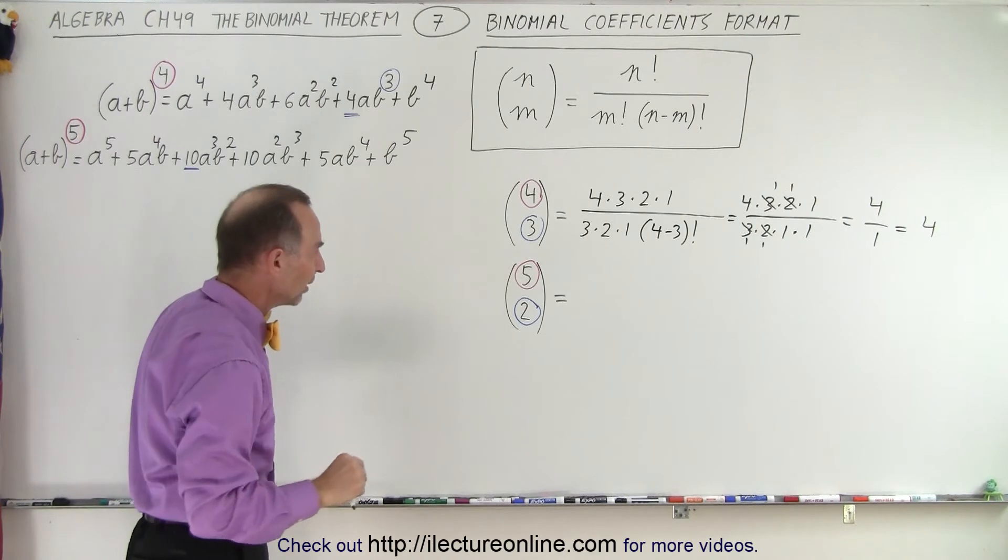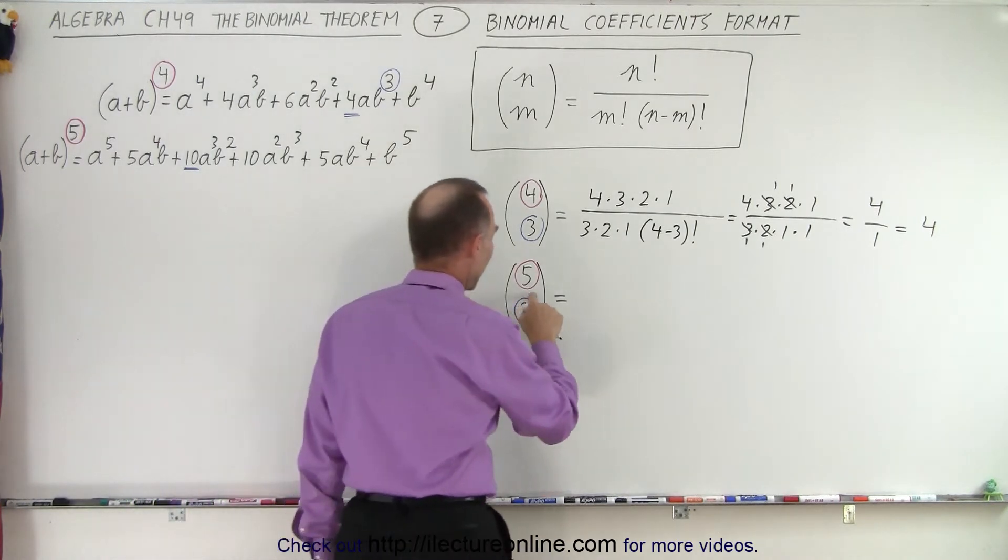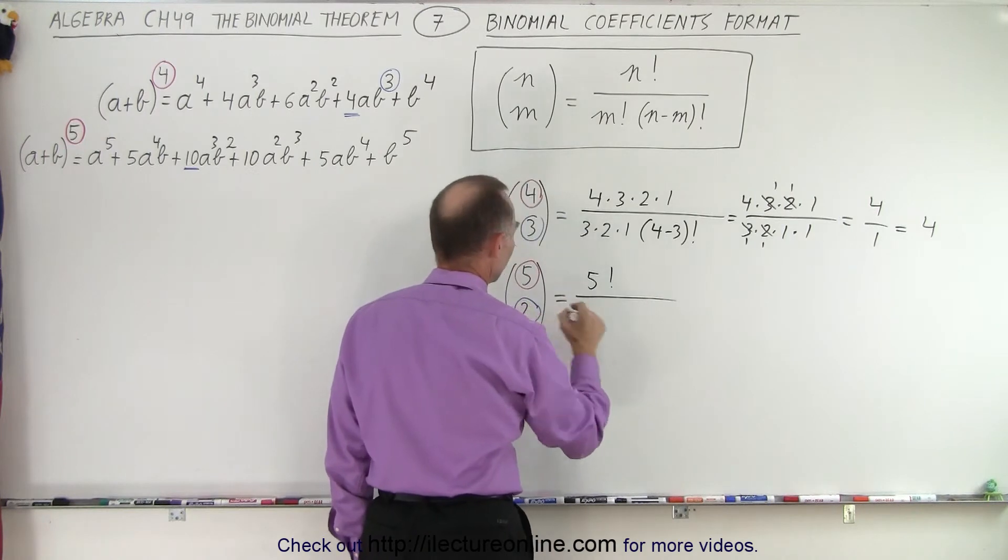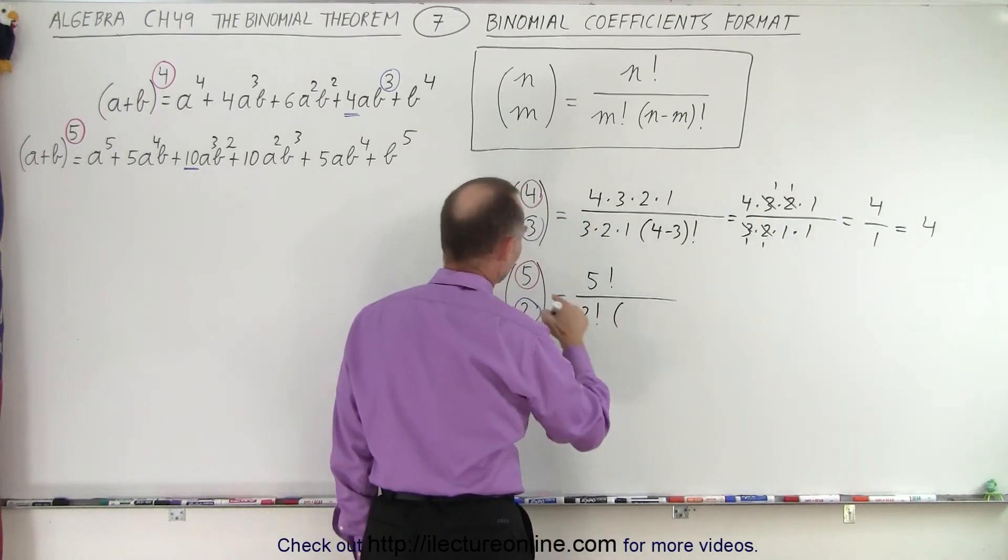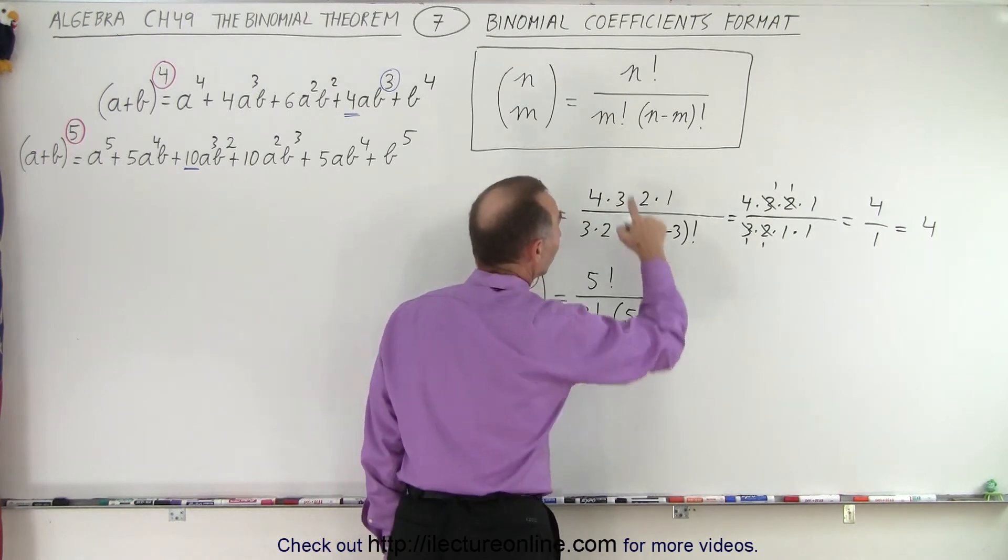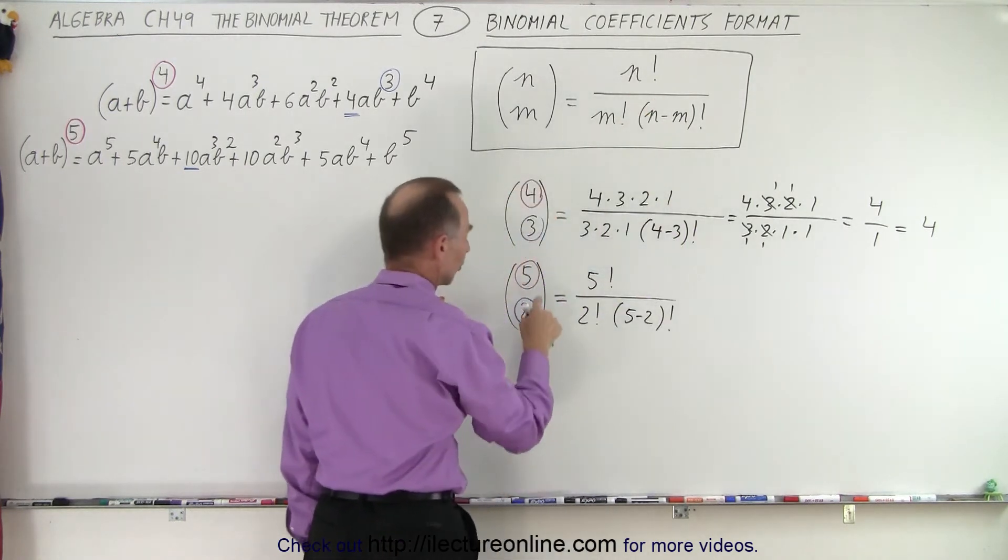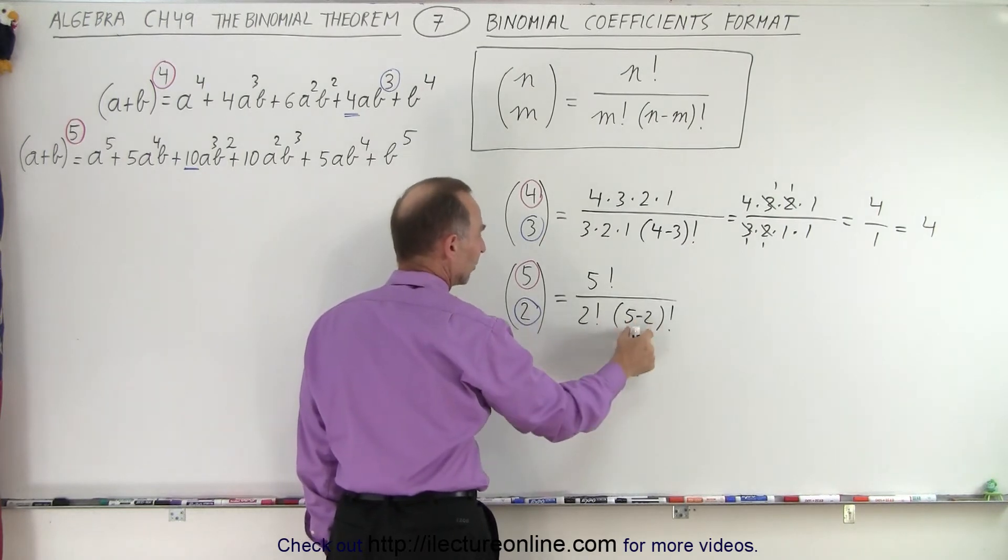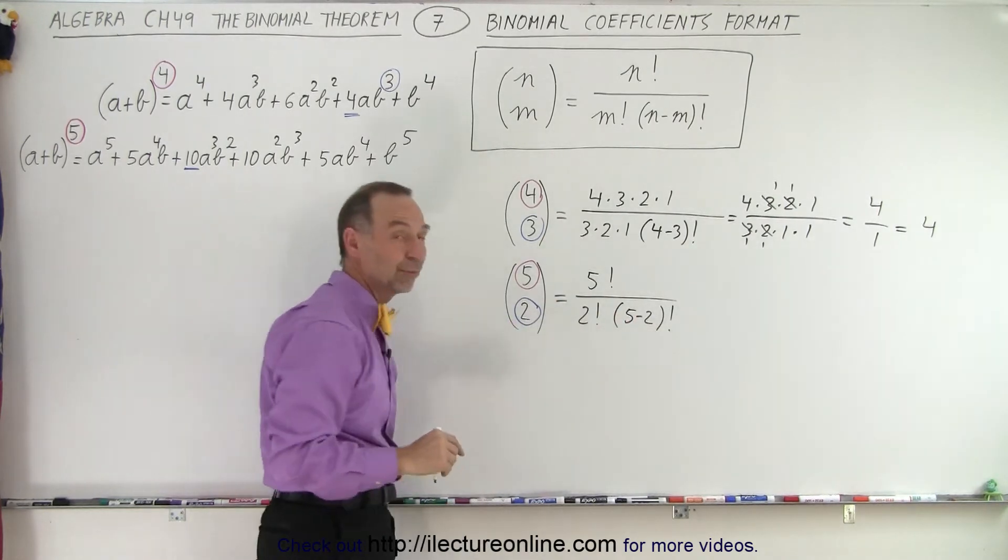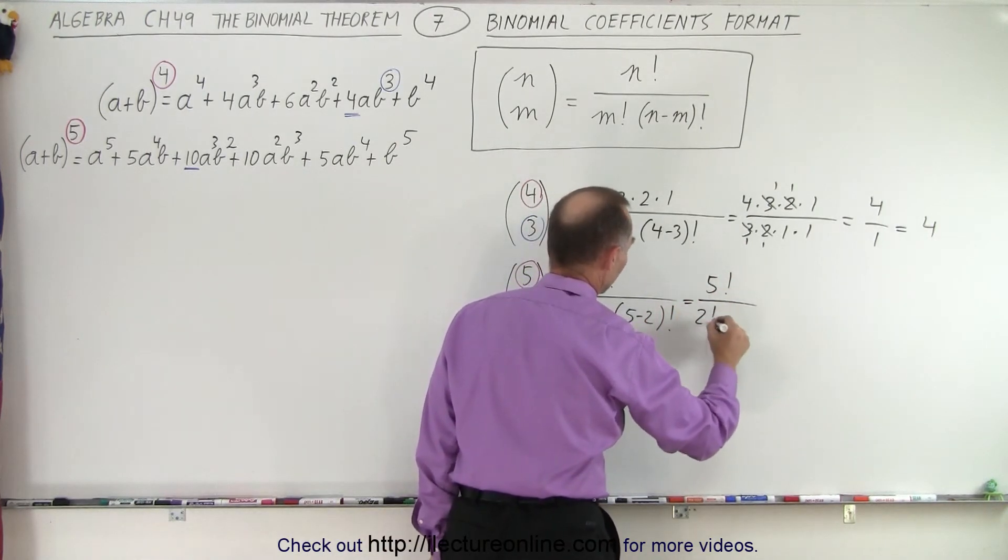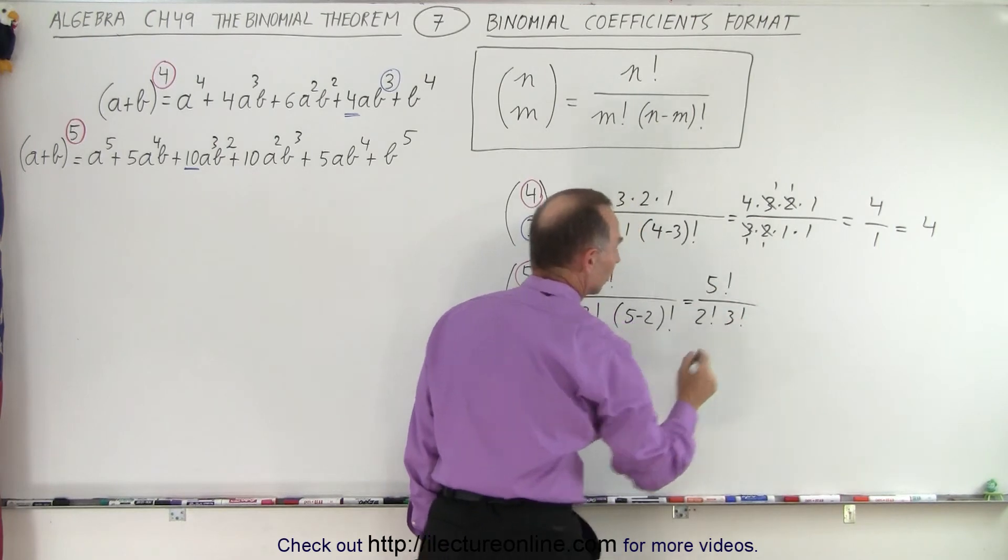Let's see if the second example works the same way. Here we have 5 factorial divided by 2 factorial times (5 minus 2) factorial. Writing this out: 5 factorial in the numerator, 2 factorial on bottom, and the difference between the two factorial. This equals 5 factorial divided by 2 factorial times 3 factorial.